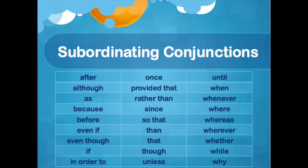Subordinating conjunctions always come at the beginning of independent clauses to make them dependent. So subordinating conjunctions always start a new clause. Here's a list of subordinating conjunctions — please make sure you have these in your notes.